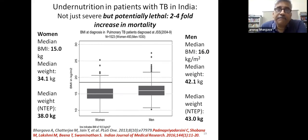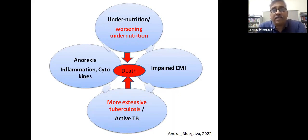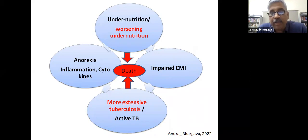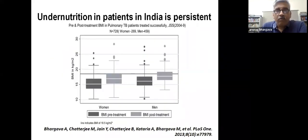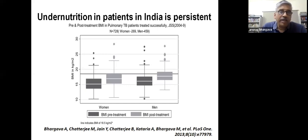These levels of undernutrition were potentially lethal, increasing the risk of mortality two- to four-fold. It is a vicious cycle: undernutrition impairs immunity, leading to tuberculosis, which worsens undernutrition through effects on appetite and cytokines, making TB more extensive, ultimately culminating in death. Undernutrition is a predictor of early mortality in TB. Weight gains were also very suboptimal in the absence of nutrition support—only a median of 3 kg—and most patients remained undernourished even at the end of treatment.